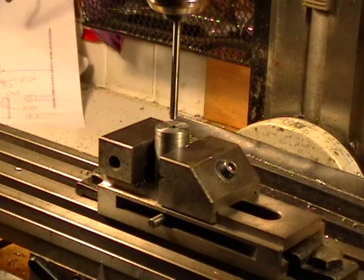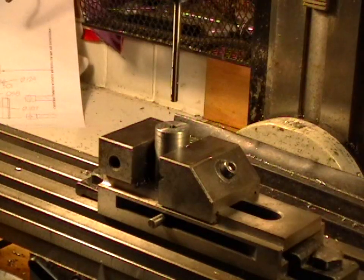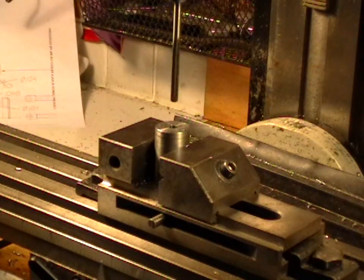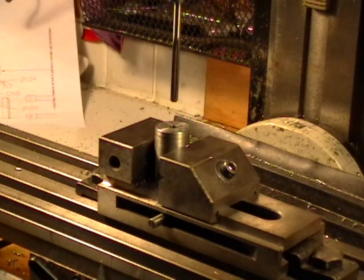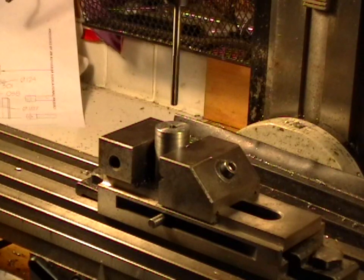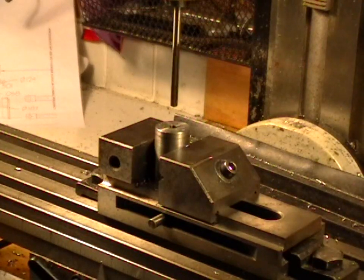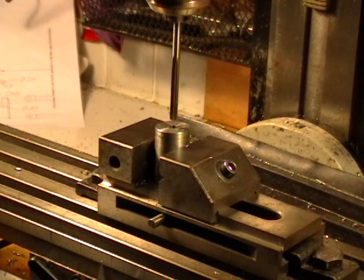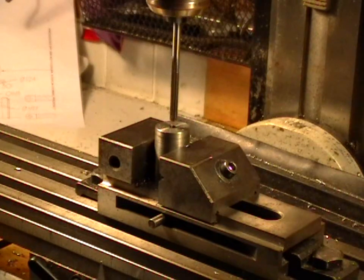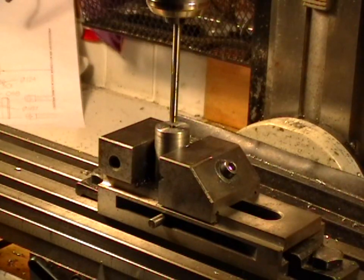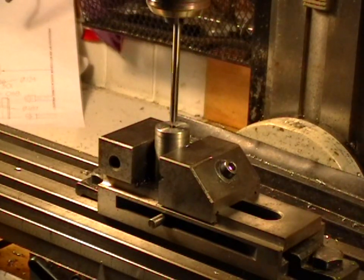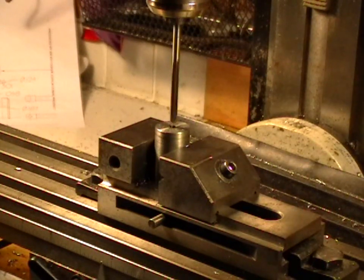The hole was drilled with a number 13 drill which is two and a half thou undersized for three sixteenths (.1875). This is a one thou undersized .1865 reamer which will make it just the right size to press in a three sixteenths drill rod crankshaft.